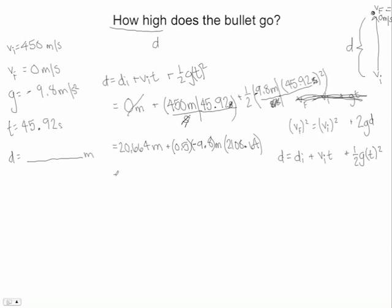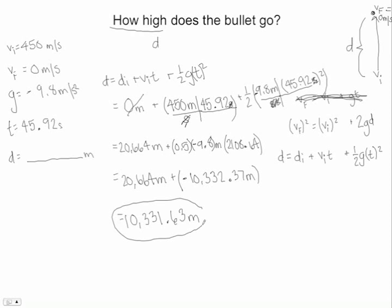So I have my 20,664 still. And then if you take all these and add them together, you're going to get negative 10,332.37 meters. 20,000 minus 10,332 is 10,331.63 meters. So this is how high the bullet went. That's pretty high.